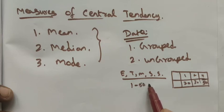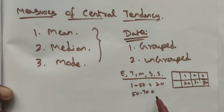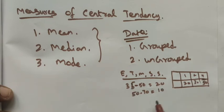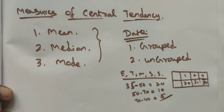For example, 35 to 50 marks — 20 students scored in that range; 50 to 70 marks — 10 students; 70 to 100 — 5 students. This total number of students we call the frequency. So in grouped data, marks are arranged in intervals with the count of students in each interval.